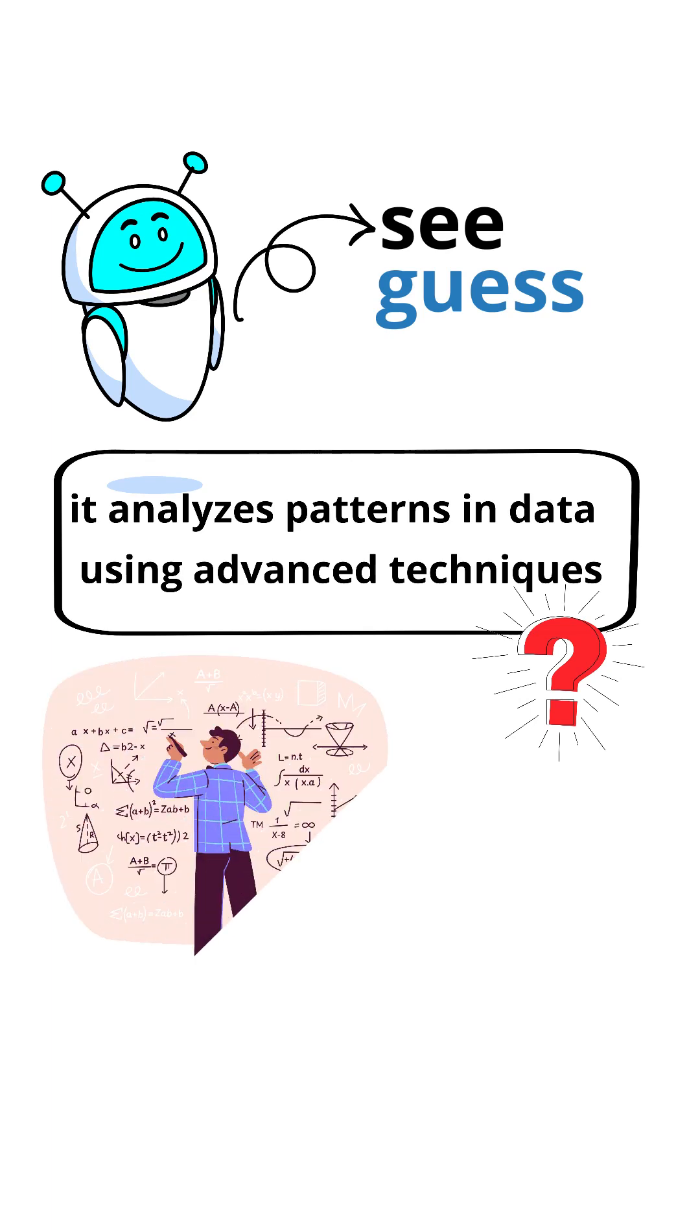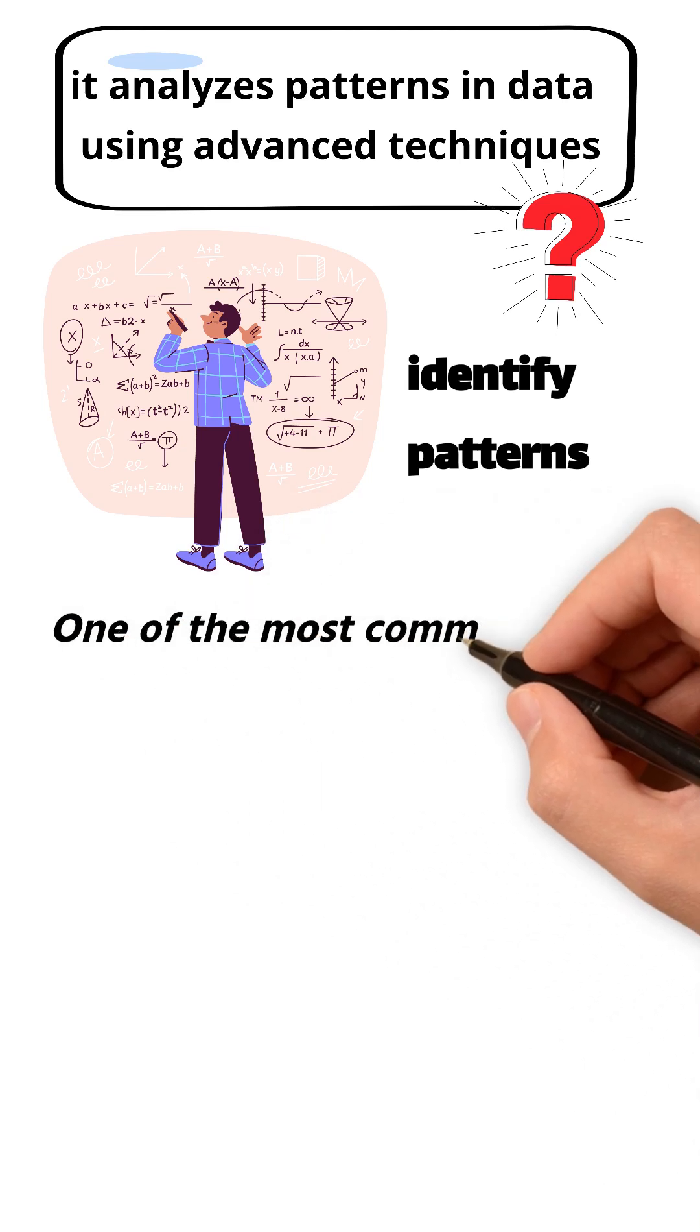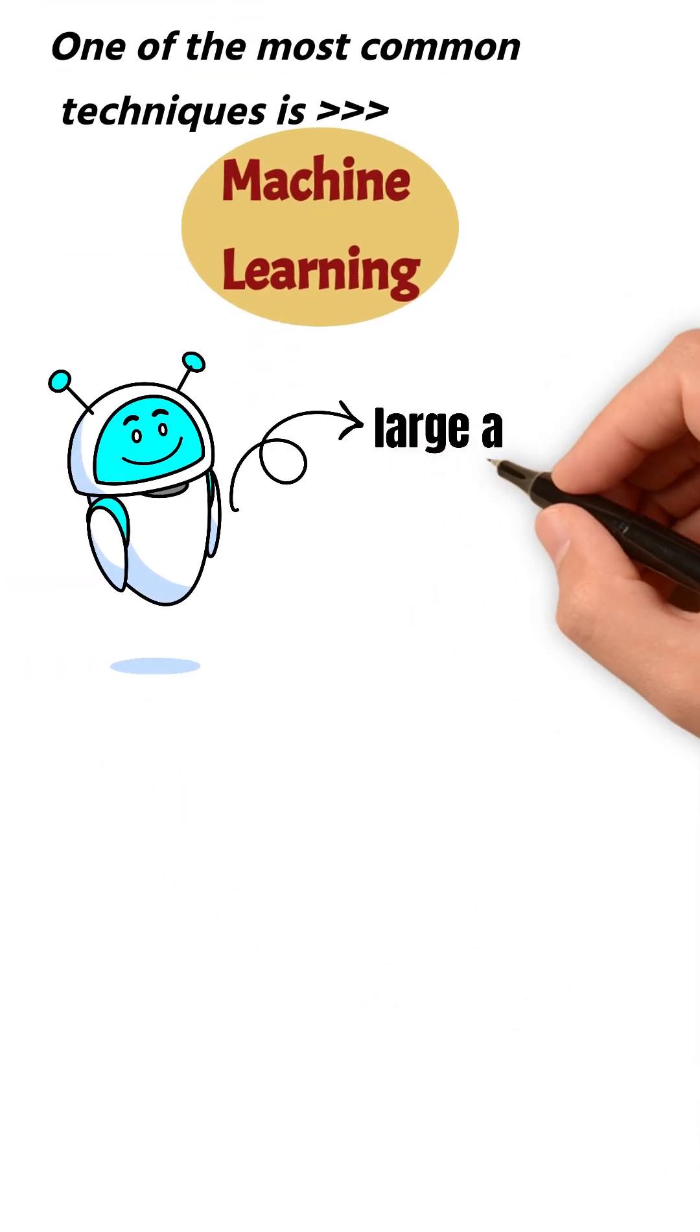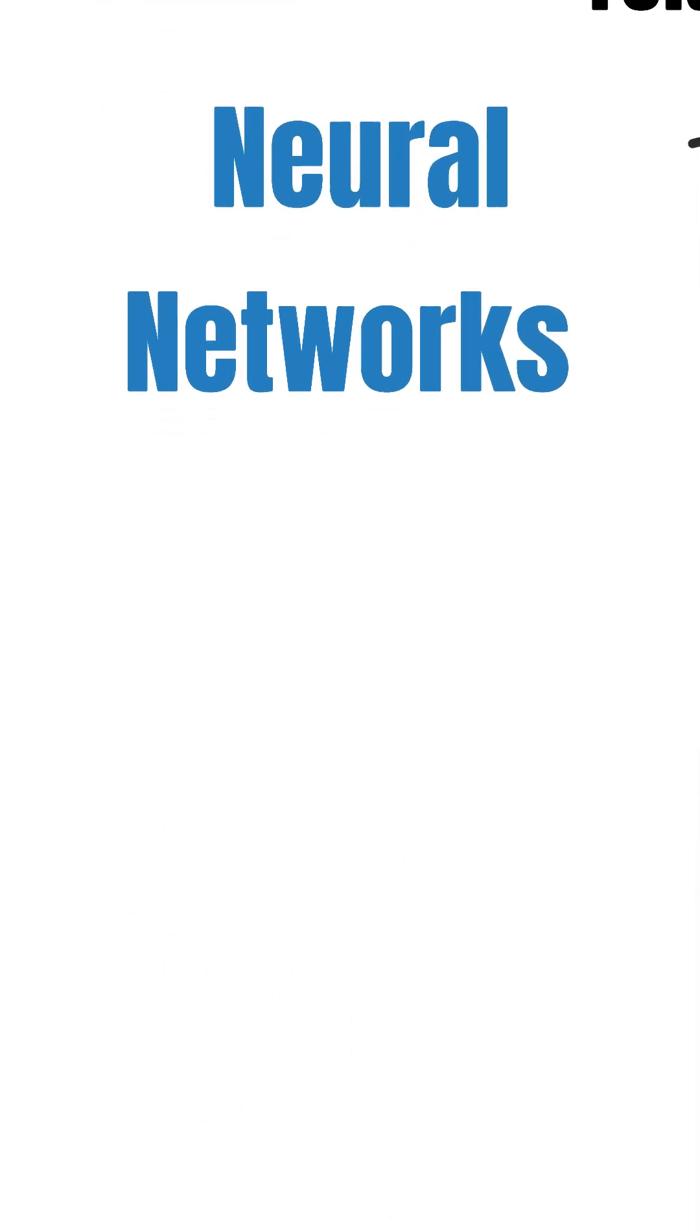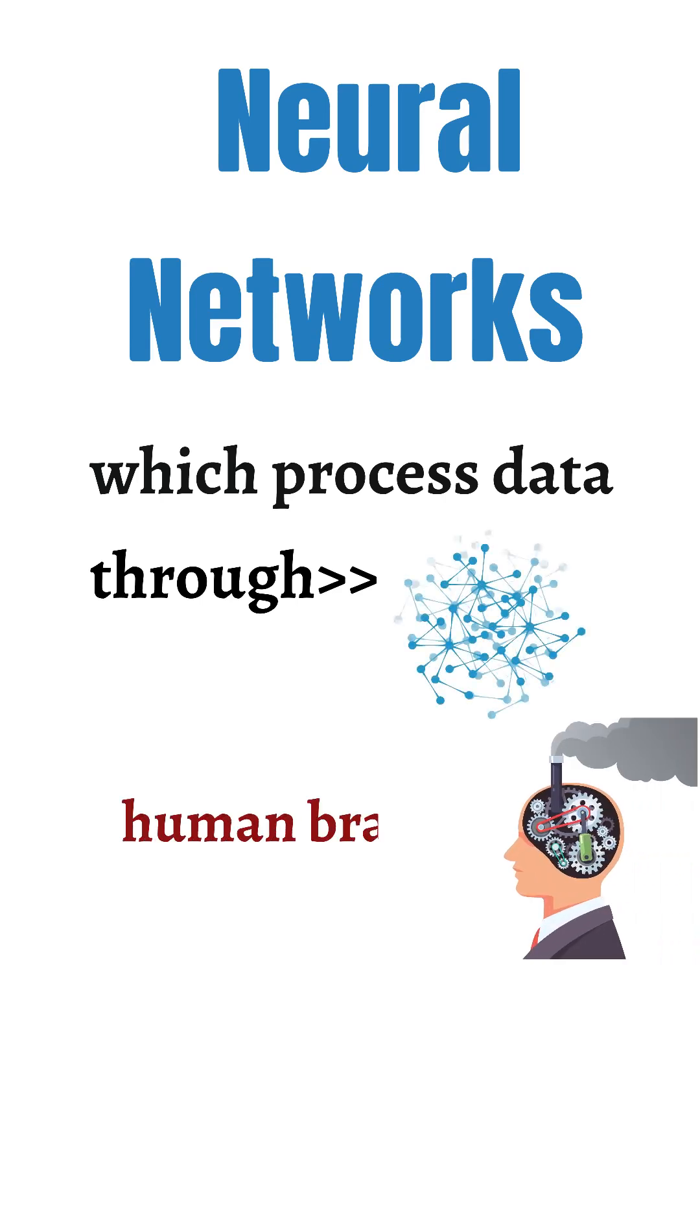AI uses mathematical models to identify patterns. One of the most common techniques is machine learning, where AI studies large amounts of data and looks for relationships. A powerful method is neural networks, which process data through layers of artificial neurons similar to how the human brain works.